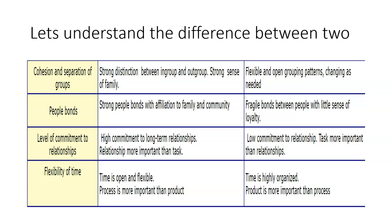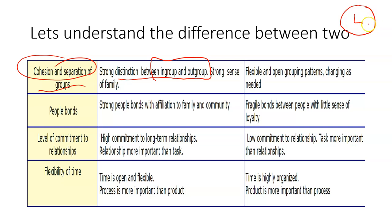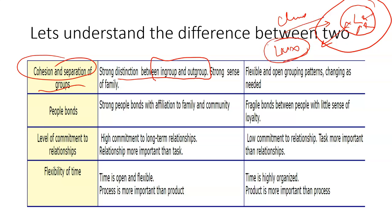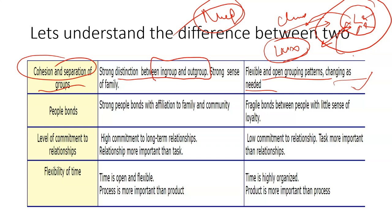Another difference is the strong distinction between in-group and out-group. In high context cultures, there is a clear distinction: in-group members favor the leader, while out-group members do not. In low context cultures, the grouping is more of an open group pattern that changes as needed — people can move between in-group and out-group based on the leader's needs. In low context culture, whoever is in-group gets favored and whoever is out-group does not.